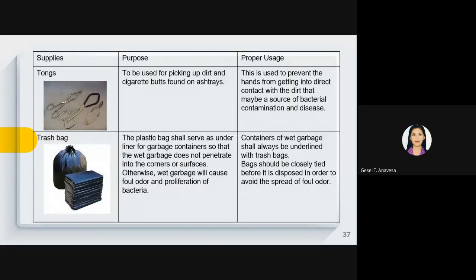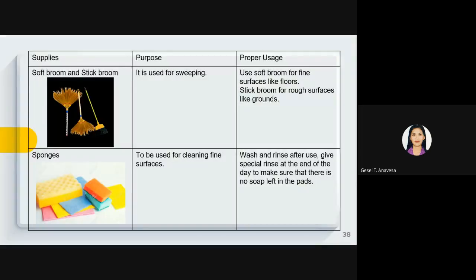Tongs are used for picking up dirt and cigarette butts found in ashtrays. Trash bags are used for waste disposal. A soft broom is used for fine surfaces like floors, while a stick broom is used for rough surfaces like grounds. Sponges are used for cleaning fine surfaces. Buckets and mops are used for cleaning floors, walls, and other parts of the building; buckets must be emptied when the water is dirty.